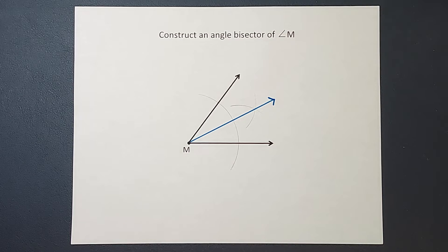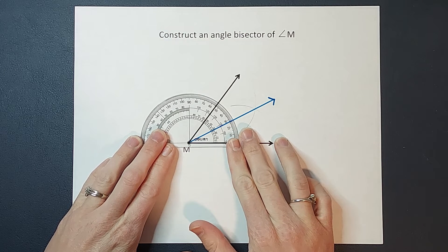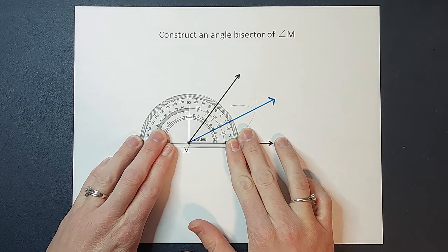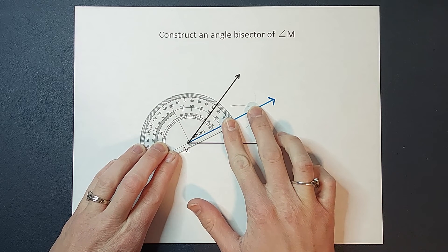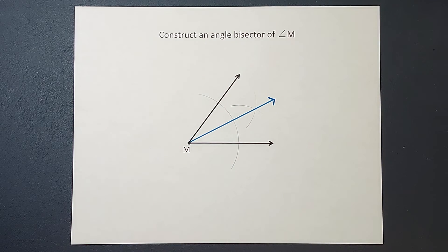Now let's go ahead and double check with a protractor and make sure that this is looking good. Let's see, I am about 27 and about 27. All right, that is looking pretty good.